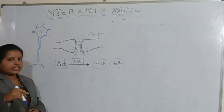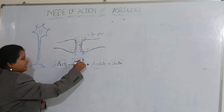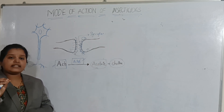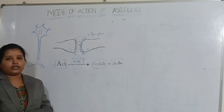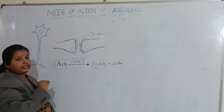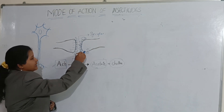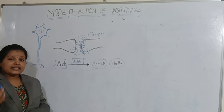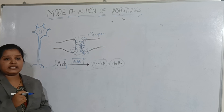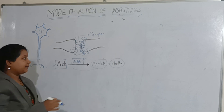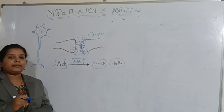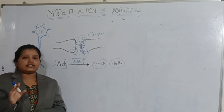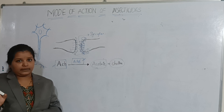There is no use of acetylcholine after conveying the message, so the acetylcholinesterase enzyme breaks it into acetate and choline. If you do not break the acetylcholine, there will be continuous accumulation of messages in the other neuron and the insect will die. That is why naturally there is an enzyme called acetylcholinesterase in the insect body to break acetylcholine into acetate and choline after the message is conveyed.